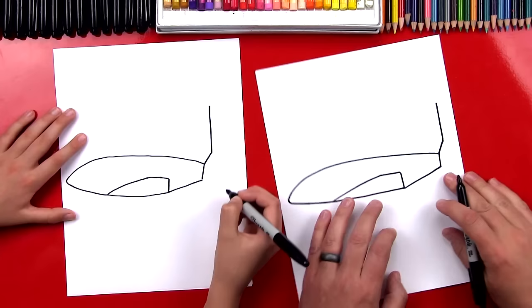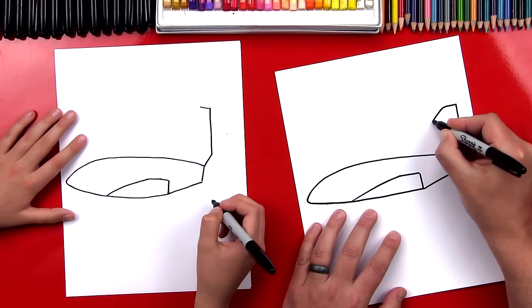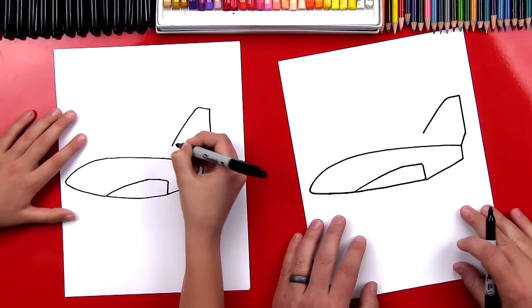Now we're gonna draw the front, so we're gonna draw a short horizontal line and then we're gonna curve down, but we're not gonna connect it yet. Good.